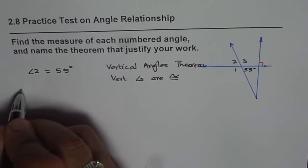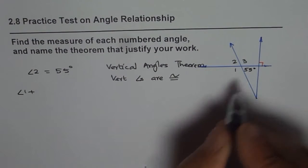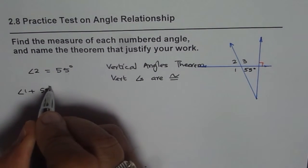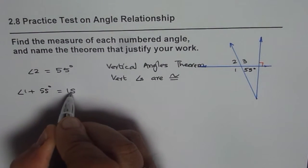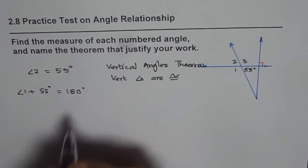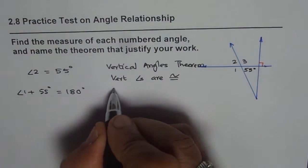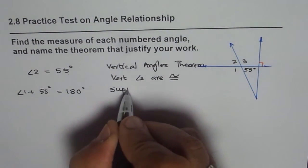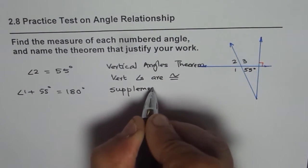So we can say angle 1 plus 55 degrees should be equal to 180 degrees. The reason is that is supplementary theorem, or supplement theorem.